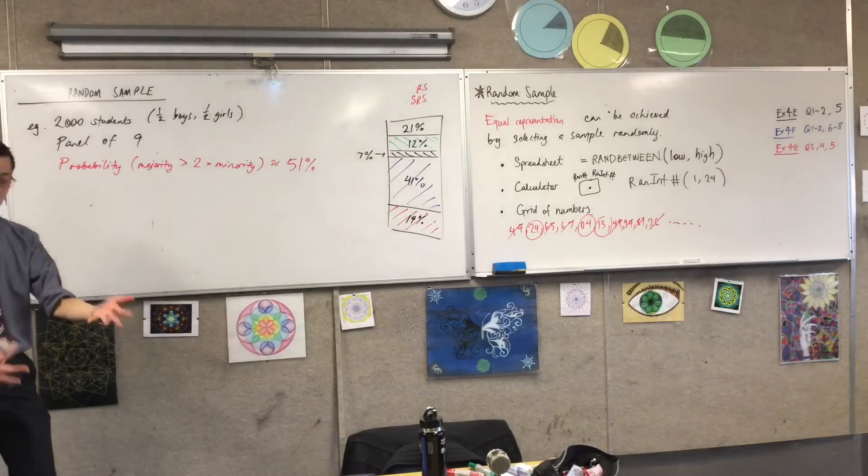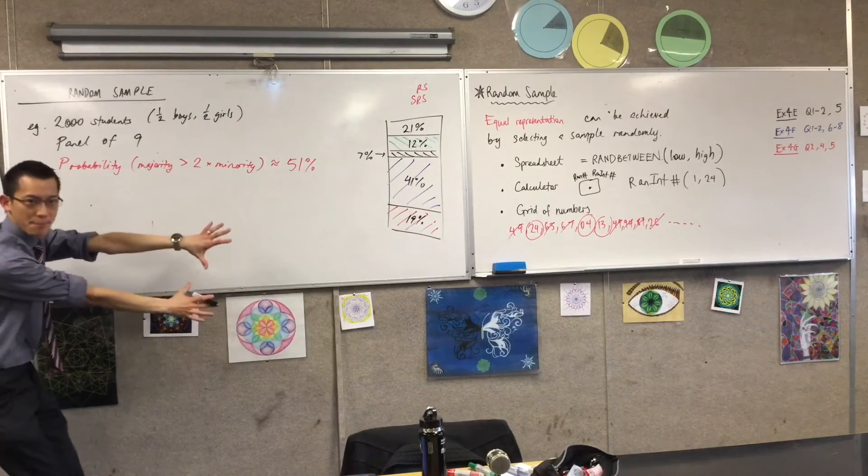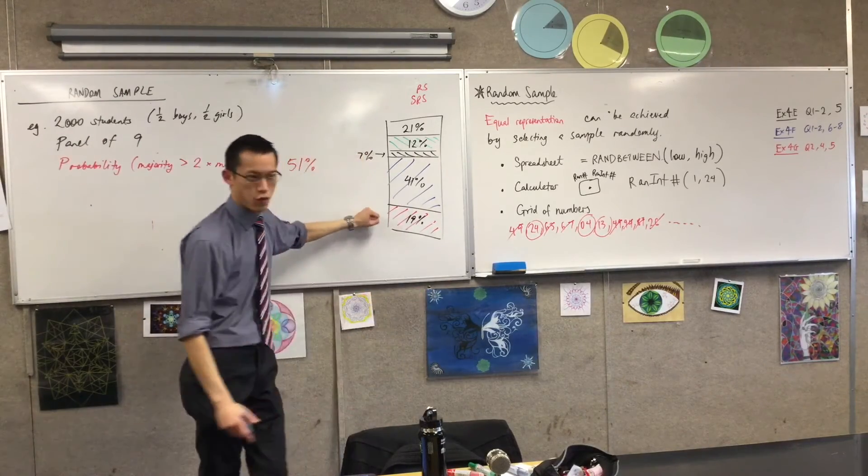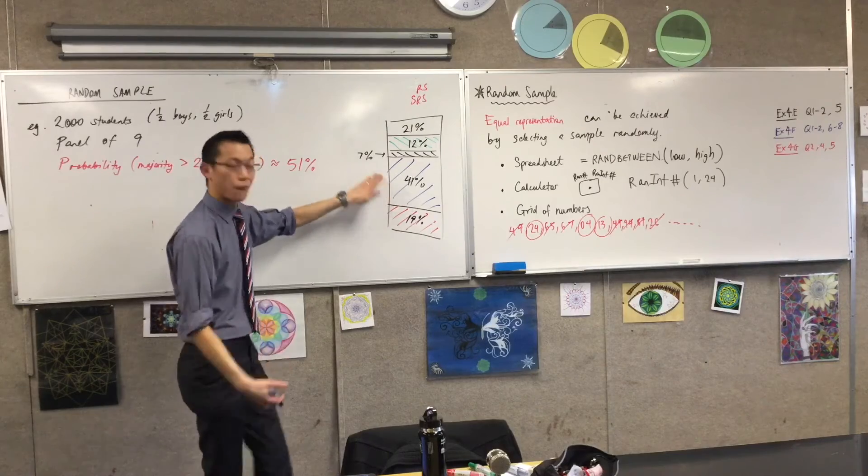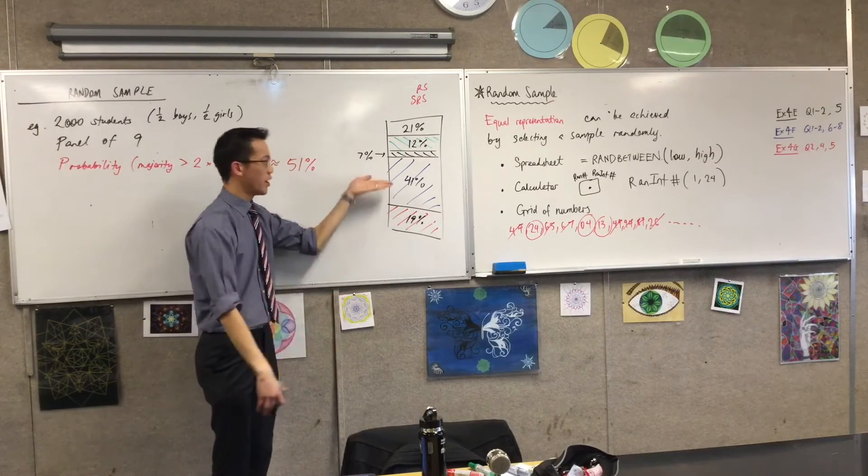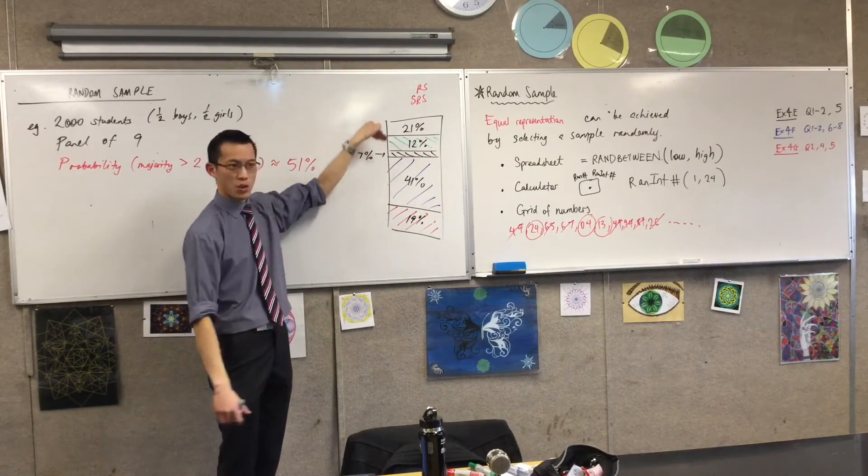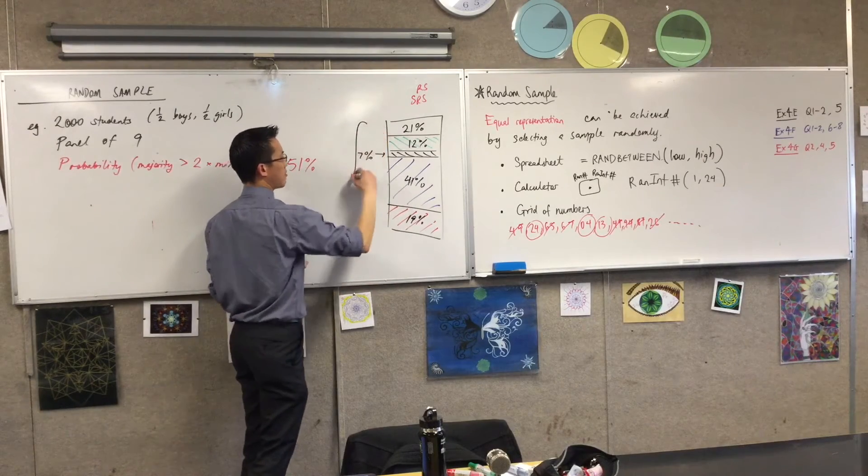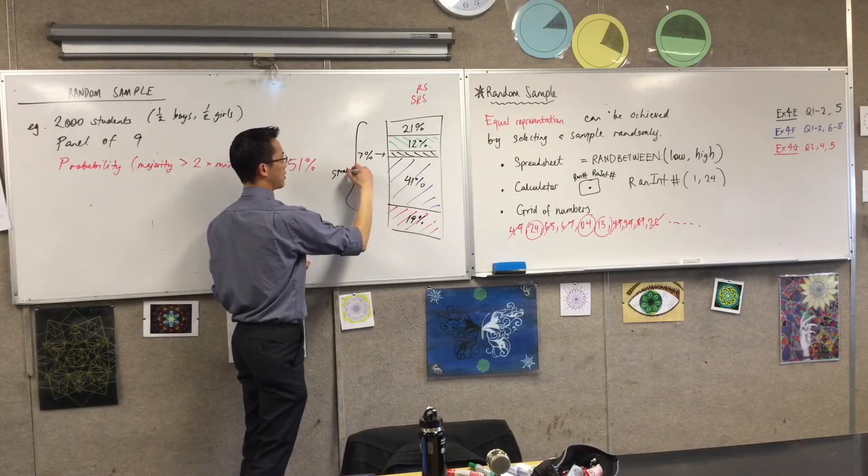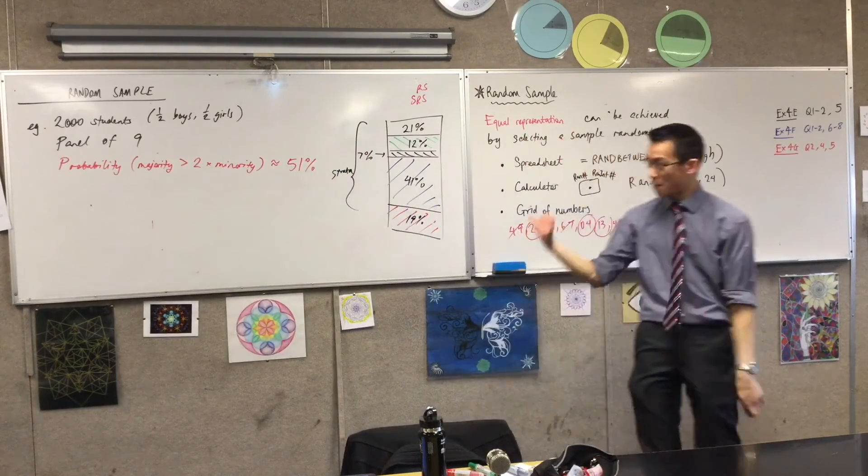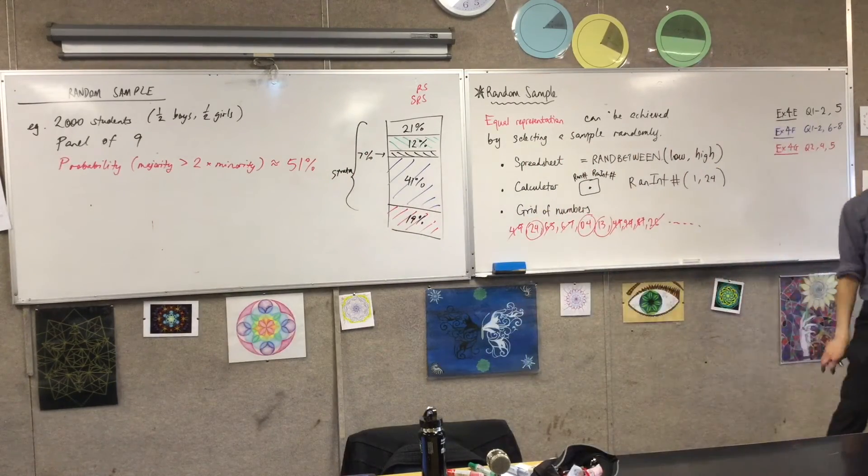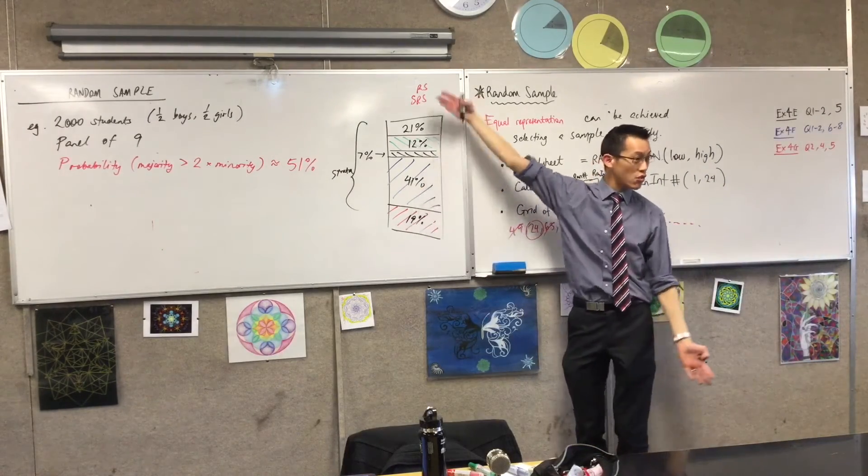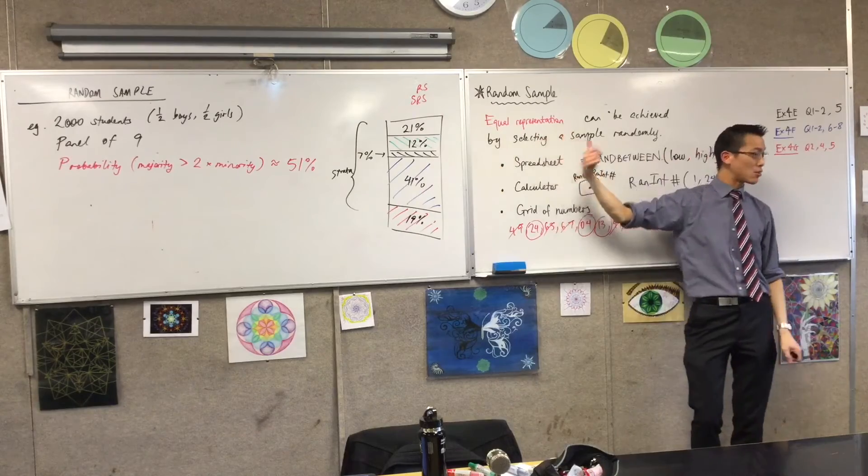What I might like to do is to say, in my sample, however large it will be, I want to make sure that 19% of my sample is from the red group. And I want to make sure 41% of my sample is from the blue group, and so on. Now these subgroups here, they have a really important name. They're called strata. It's just the Latin word for layers, which is why we've drawn it like this.